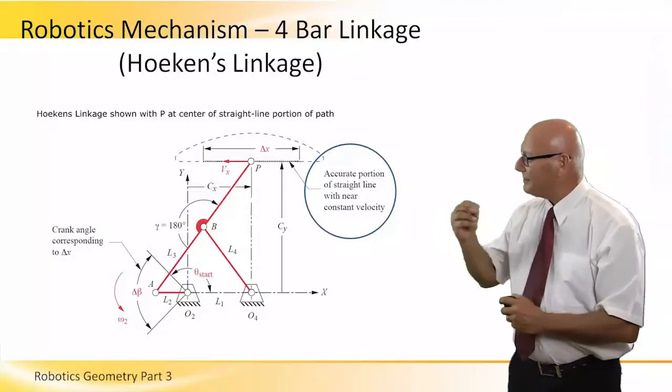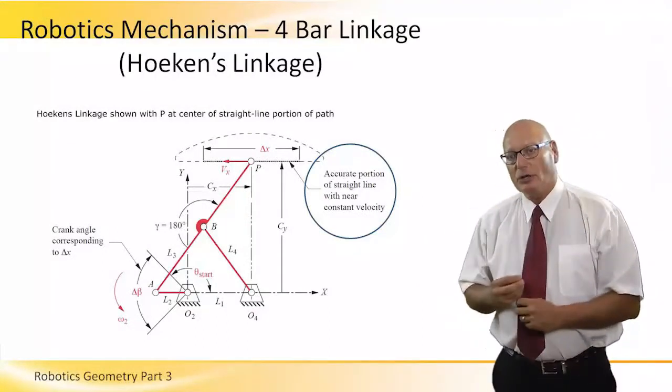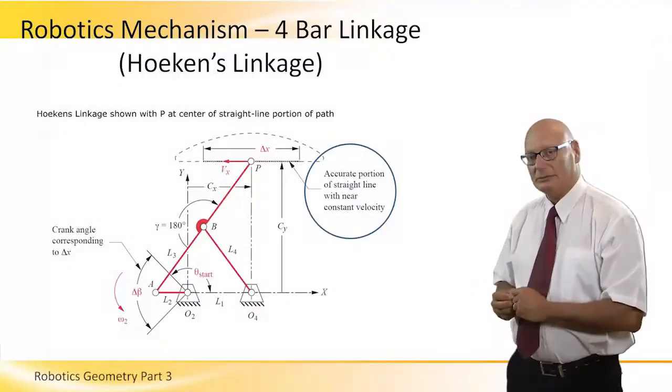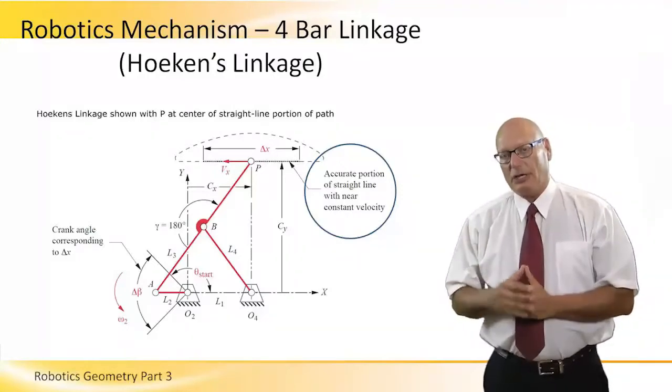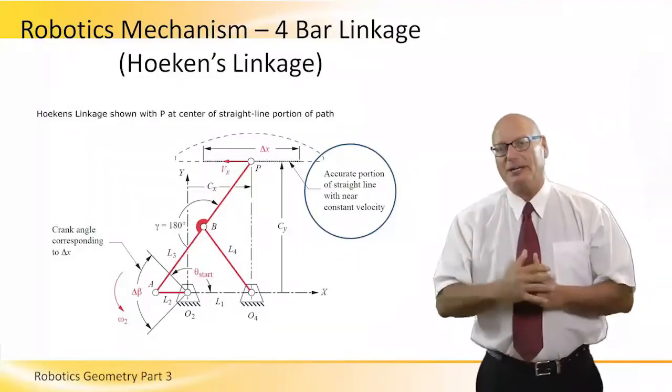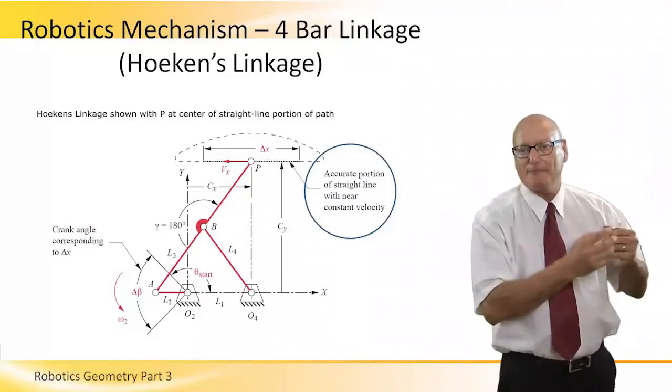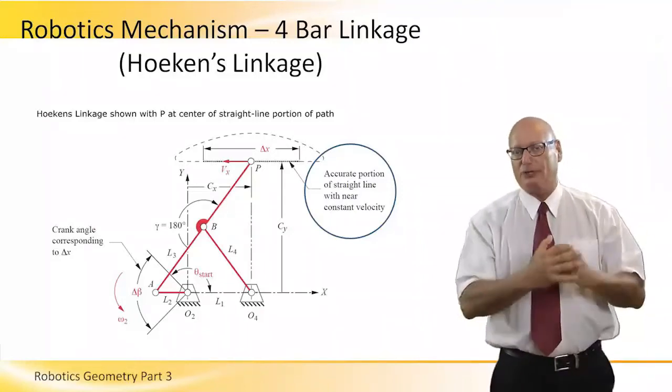Here is another presentation of mechanical linkage called Hoeken's linkage. Hoeken's linkage is a four-bar linkage, a very common mechanical joint and movement in robotics.